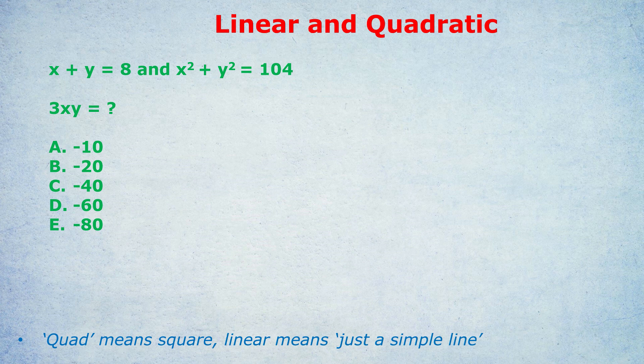What's my magical method? Well, we have a problem: we have one linear equation — linear just means in a straight line, no curves — whereas quadratic, quad means square, it's a squared equation. The first equation is a linear equation, x plus y equals 8. The second one is quadratic, x squared plus y squared equals 104. There's a mismatch there, which makes it hard to translate. So my method begins with one simple step: we are going to square both sides of the linear equation.